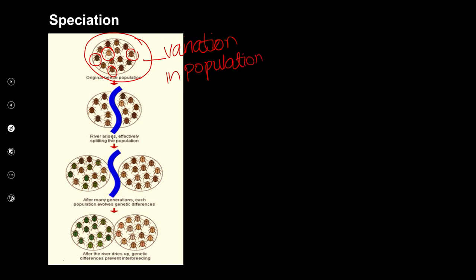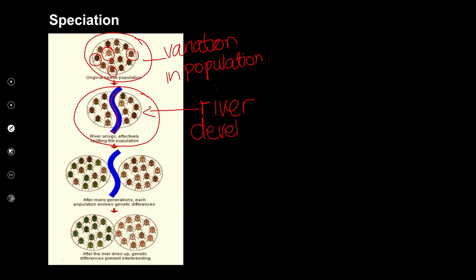What happens next is there's some kind of environmental change. Looking at the next diagram, we can see something specific happened in the environment of these beetles — a river has now developed, and has now split the population in two. There were floods, heavy rain possibly, and a river has developed. Now the population is split into two groups.